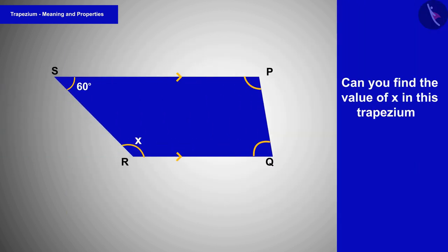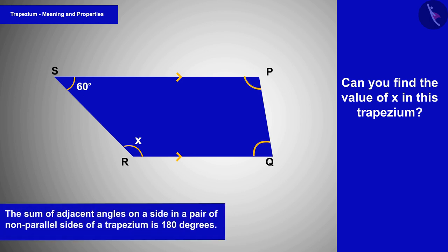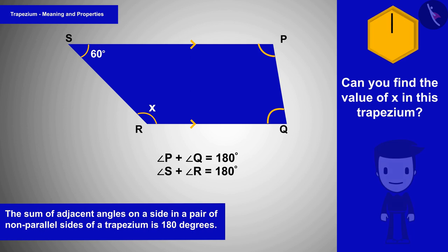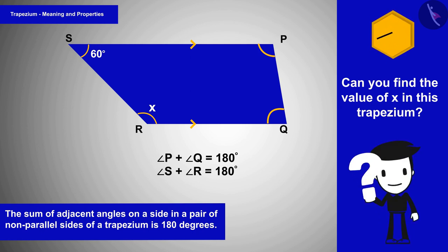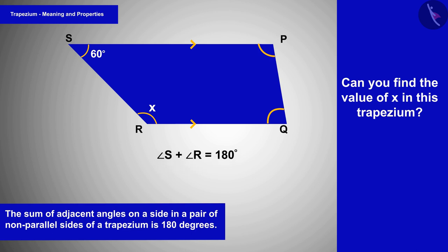Let us now look at some examples based on properties of a trapezium. Can you find the value of x in this trapezium? In the previous video we learned that the sum of adjacent angles on each non-parallel side of a trapezium is 180 degrees. Can this property help you find the value of x? Yes, this property of trapezium can help us find the value of x.